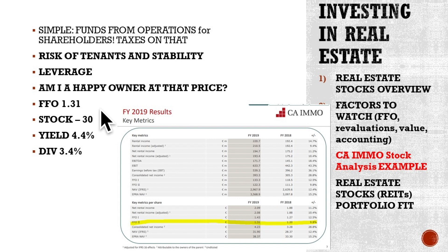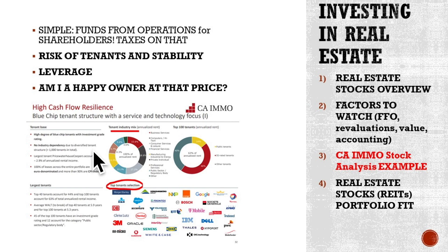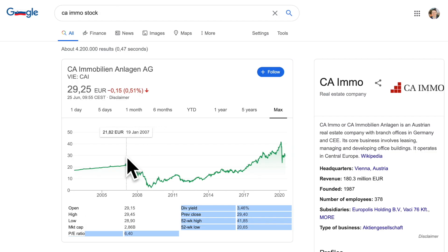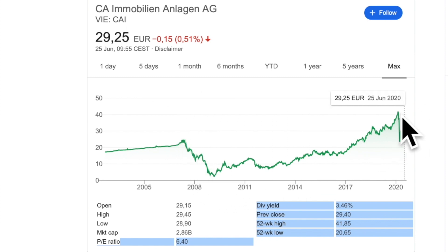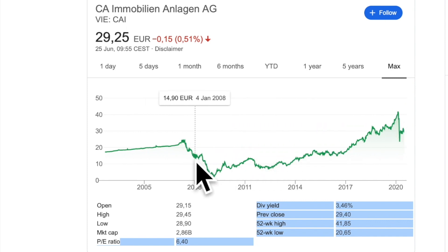Funds from operations: 1.31. The stock is around 30 euros. The business yield is 4.4%, of which they pay out about 75% — a 3.4% dividend yield in a good economic environment as of 2019. Looking at tenants and stability, there are many tenants you'd recognize; they are well diversified. But in case of economic crisis, some tenants will go bankrupt, cancel their leases, or lower the leases. And we can see what happened in 2007 to 2009 — the stock fell 90%, then it exploded again thanks to stimulus. This can also happen when you invest in leveraged REITs.